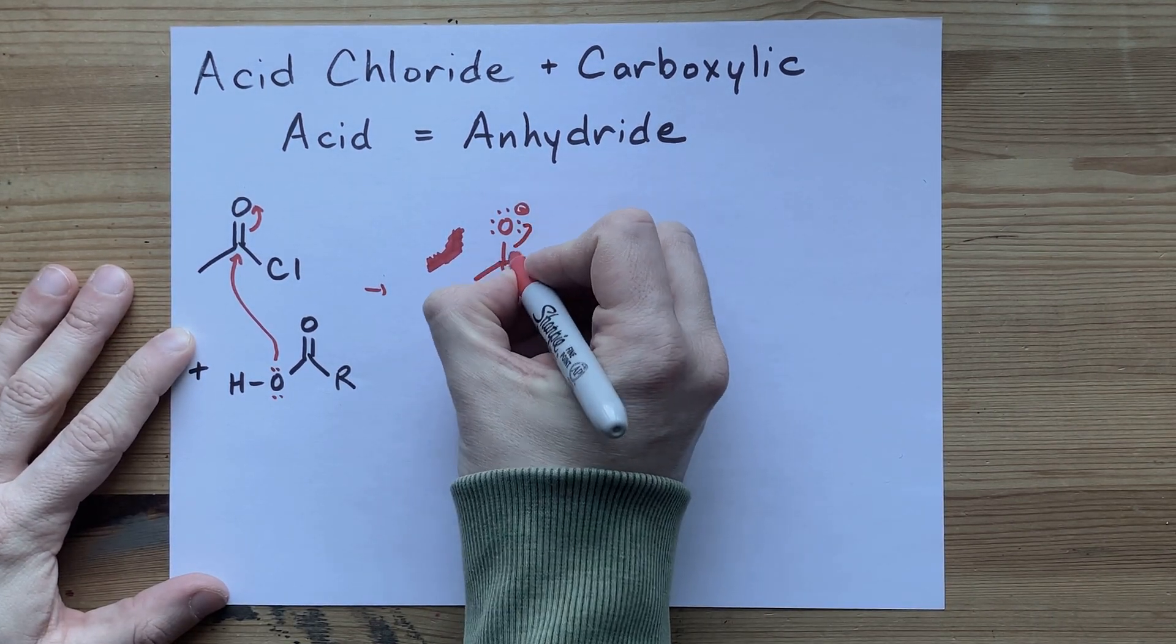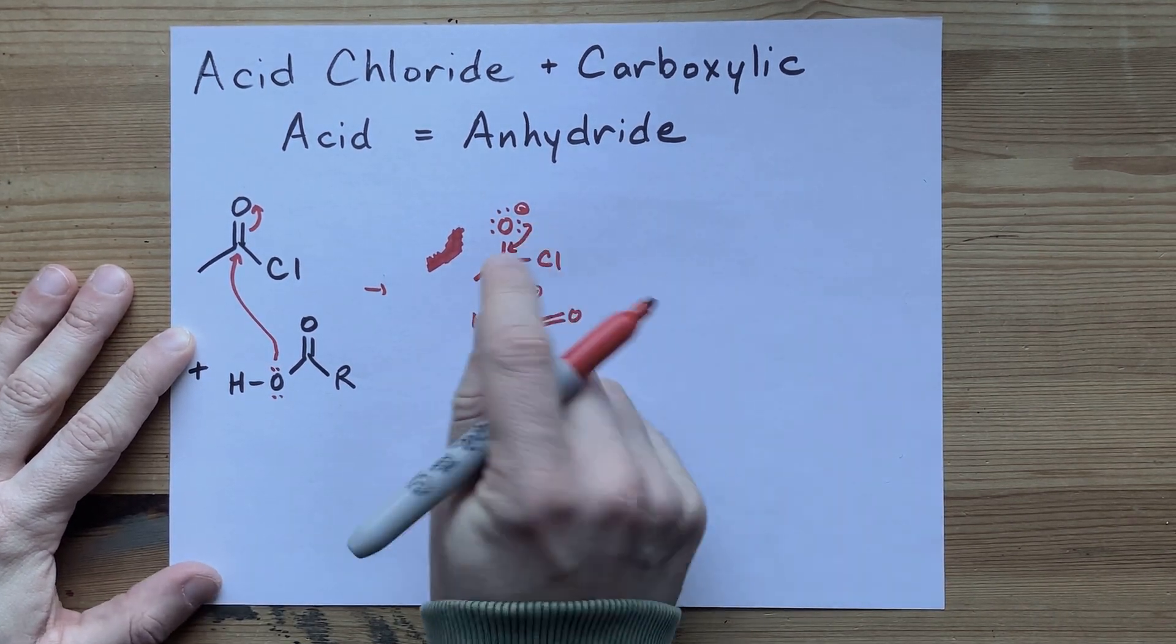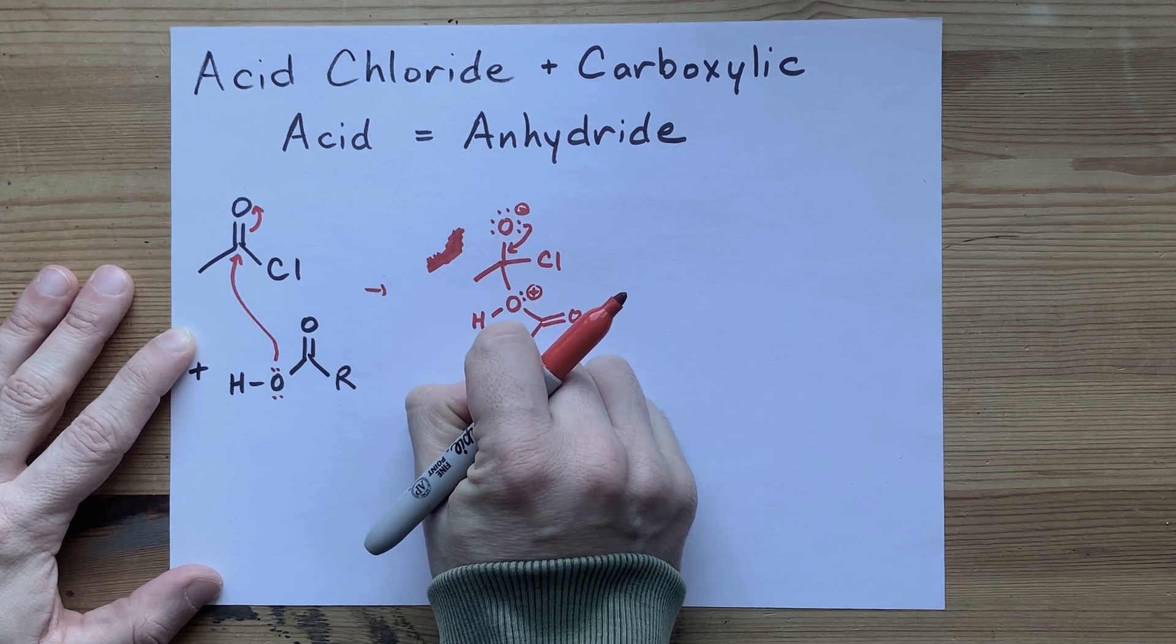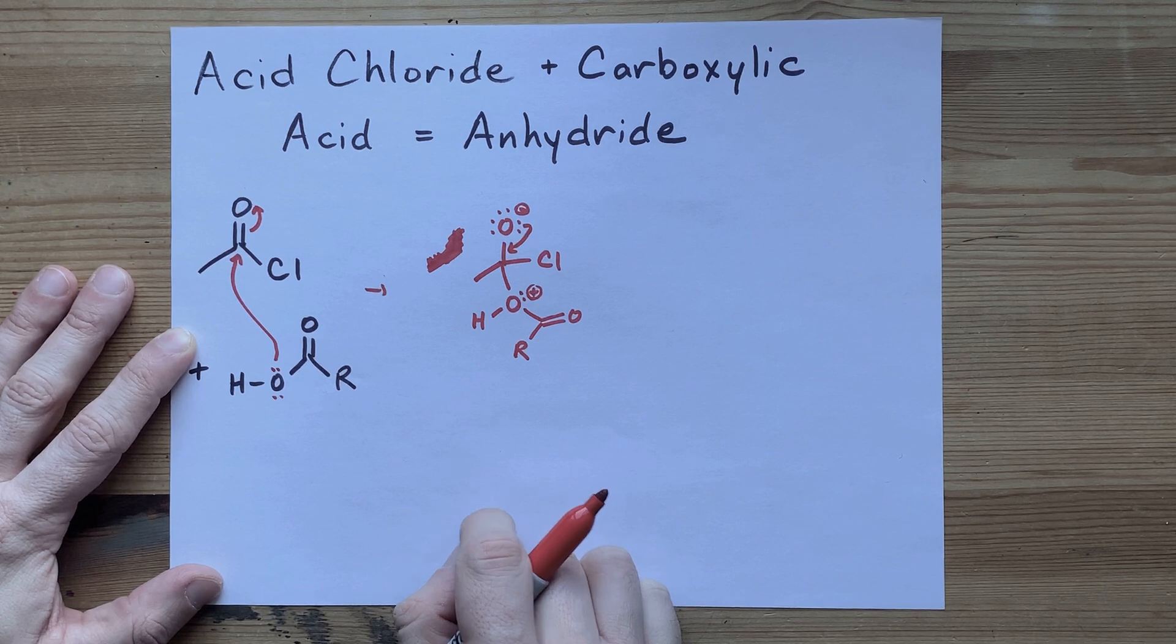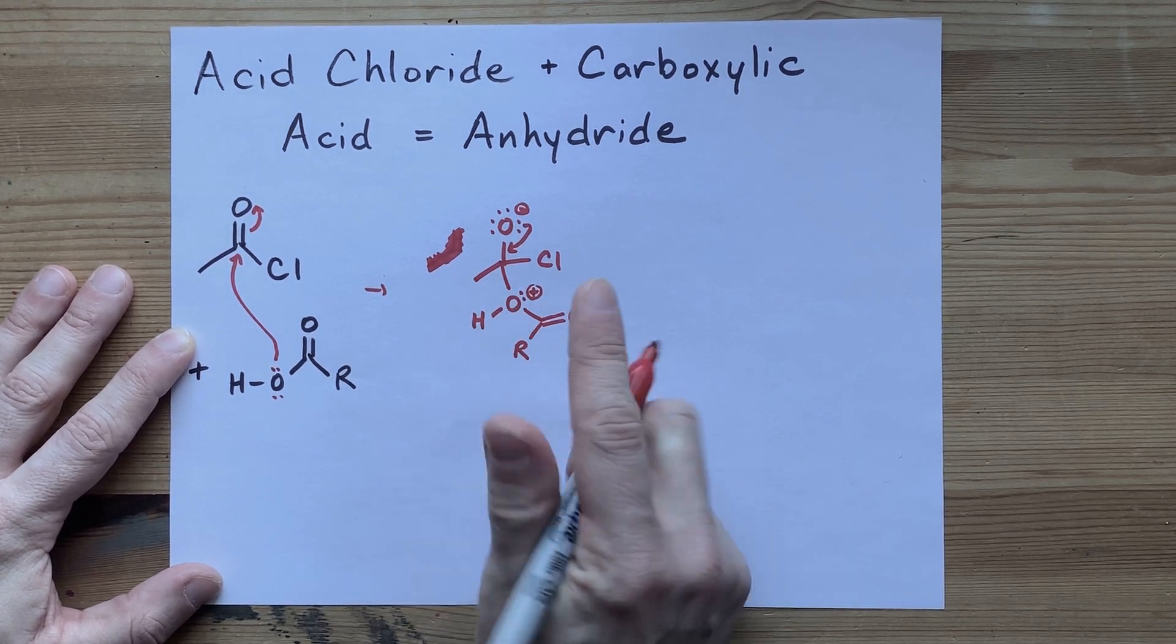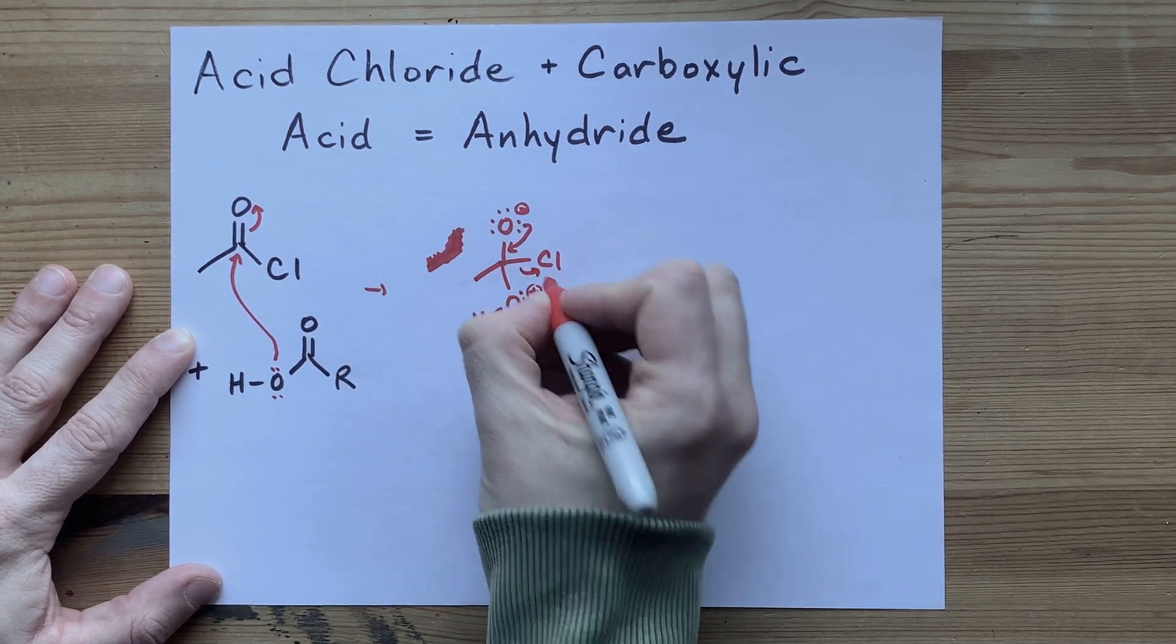The double bond between the oxygen, the oxygen that has the formal charge of minus one, reforms. It's basically the reverse of what happened here. But instead of this new bond breaking, it's the chloride that falls off. Cl minus is a great leaving group.